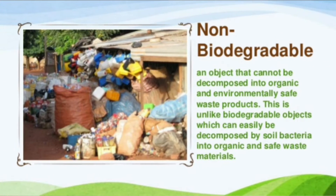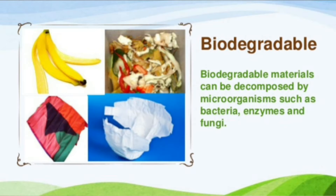Biodegradable materials can be decomposed by microorganisms such as bacteria, enzymes, and fungi. Biodegradable waste products include household materials such as vegetable or cooked food materials. They can be easily degraded by microbes and also include agricultural waste products.